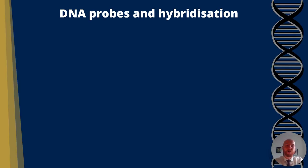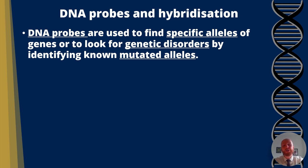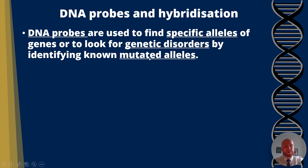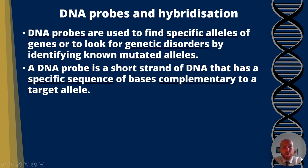DNA probes and hybridisation. DNA probes are used to find specific alleles of genes, or to look for genetic disorders by identifying known mutated alleles. An allele is a different version of a gene; a gene codes for a protein and a mutation is a change in the gene. A mutated allele is where the base sequence is different. A DNA probe is a short strand of DNA that has a specific sequence of bases complementary to a target allele.